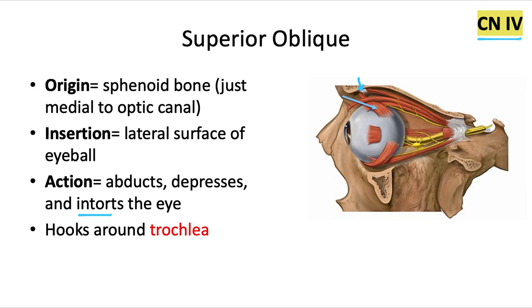The superior oblique is innervated by cranial nerve 4 instead of cranial nerve 3. The name of cranial nerve 4 is the trochlear nerve, and that's how it gets its name — because the only muscle it innervates hooks around the trochlea.